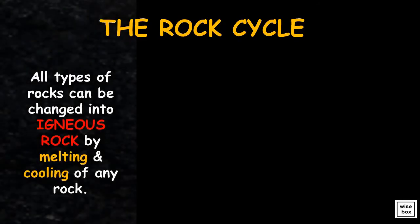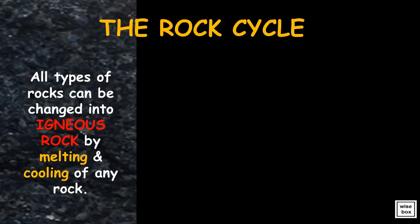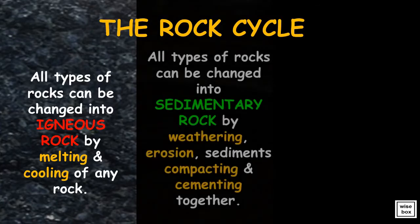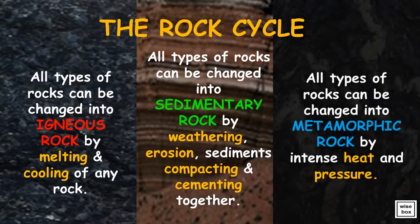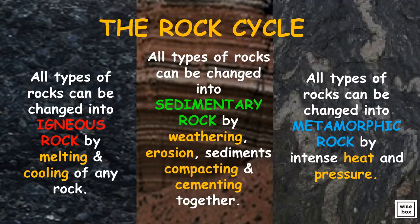The rock cycle: all types of rocks can be changed into igneous rock by melting and cooling. All types of rocks can be changed into sedimentary rock by weathering, erosion, and sediments compacting and cementing together. All types of rocks can be changed into metamorphic rock by intense heat and pressure. This constant change of rocks from one form to another is the rock cycle.